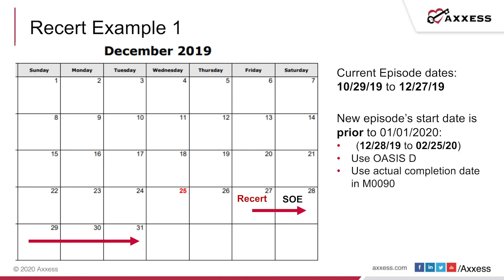Let's look at an example. Our current episode dates are 10-29 to 12-27. Our new episode start date is prior to 1-1-2020, so our new from-to will be 12-28-19 to 2-25-20, which will be paid under Home Health PPS because it begins before January 1st, 2020. In this case, we will use an OASIS D and use the actual completion date in M90.